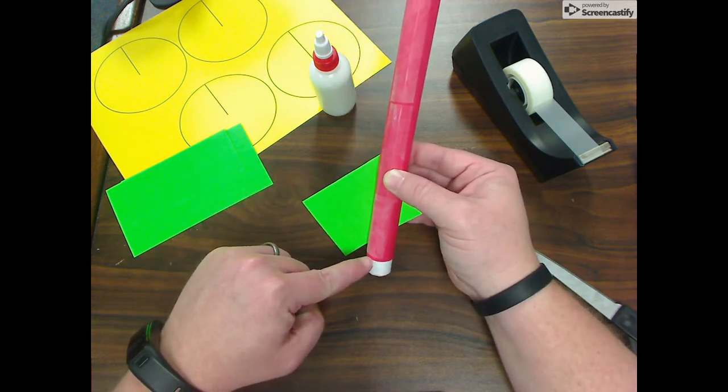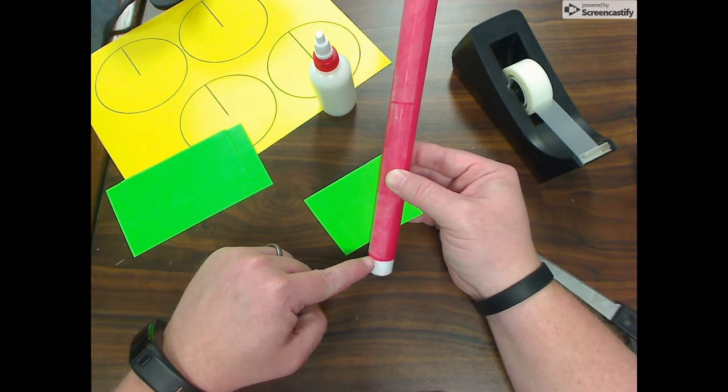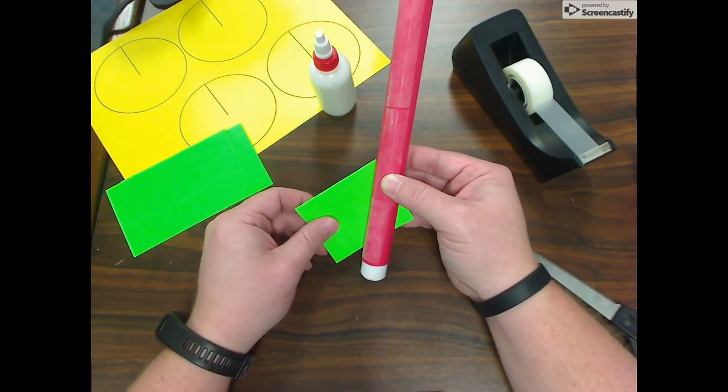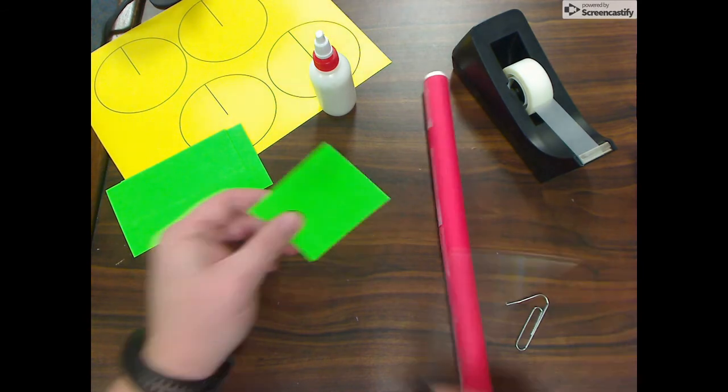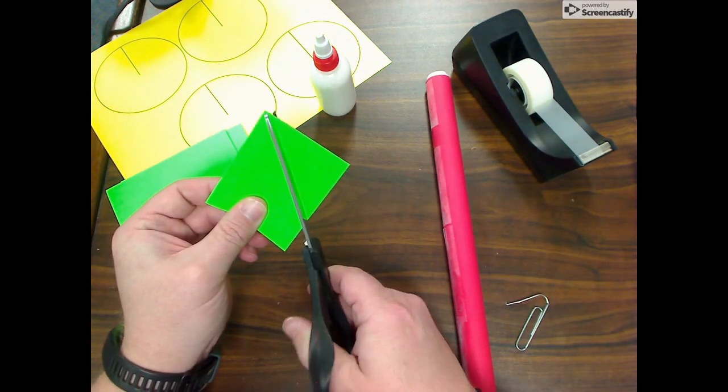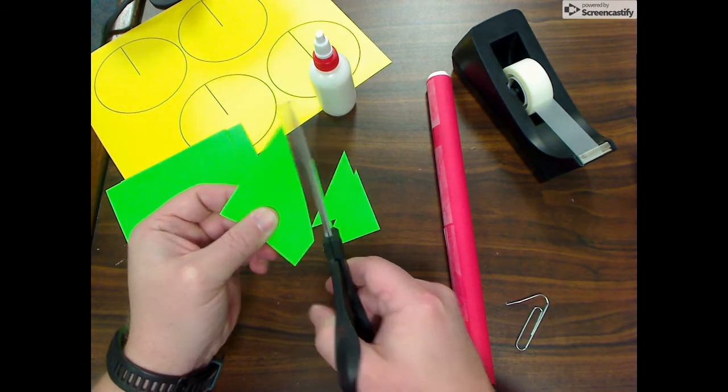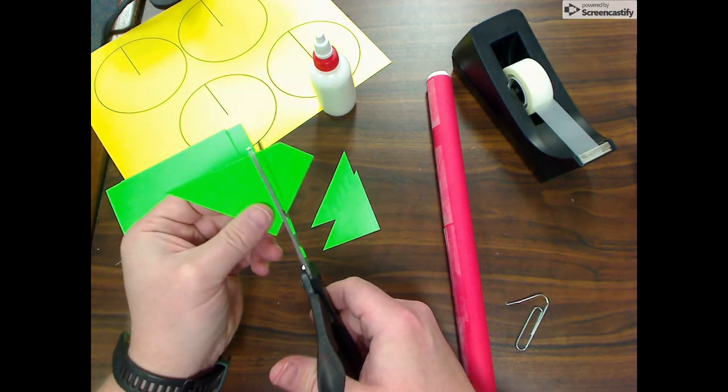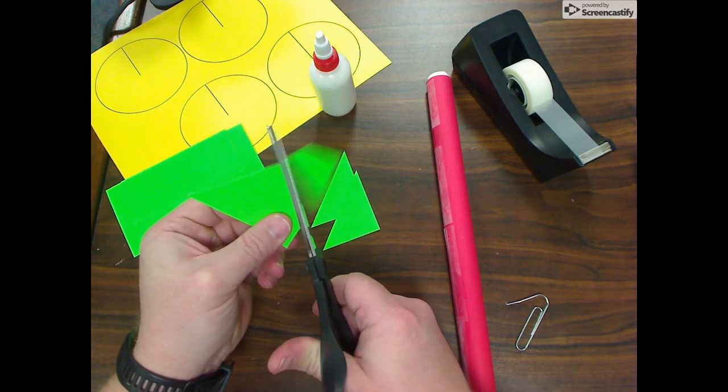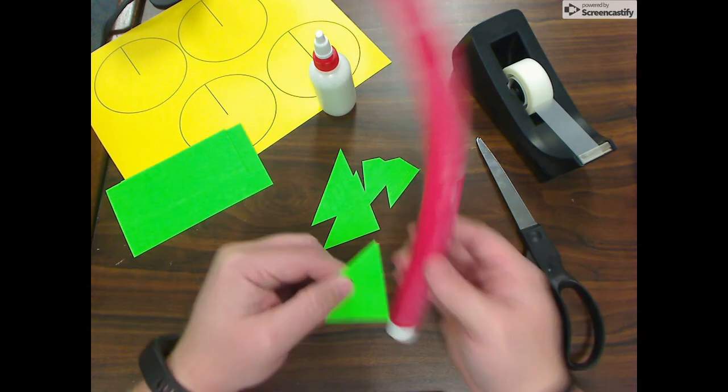Also, when you get ready to tape them down, you want to tape them all the way to the bottom because that will help them stand up. So what I'm going to do is I'm going to cut here and here, and this is going to be one of my rocket fins.